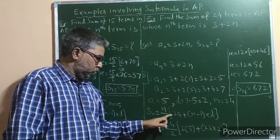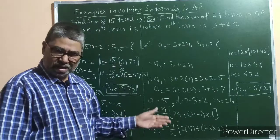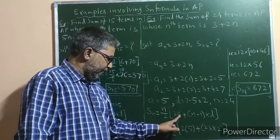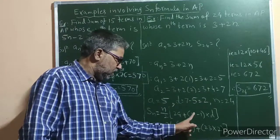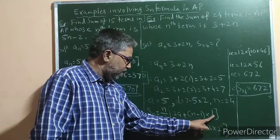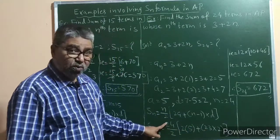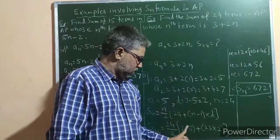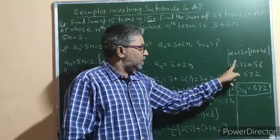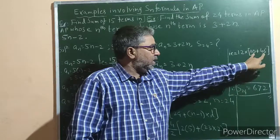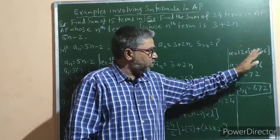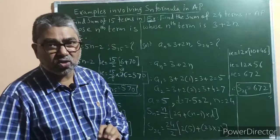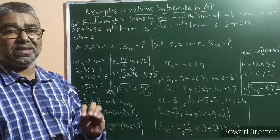Write the formula: Sn = n/2 × (2a + (n−1)d). Substituting values: S24 = 24/2 × (2×5 + (24−1)×2) = 12 × (10 + 23×2) = 12 × (10 + 46) = 12 × 56 = 672. Hence the sum of the first 24 terms is 672.